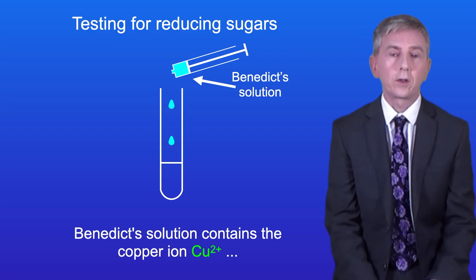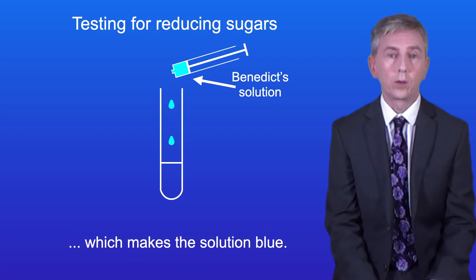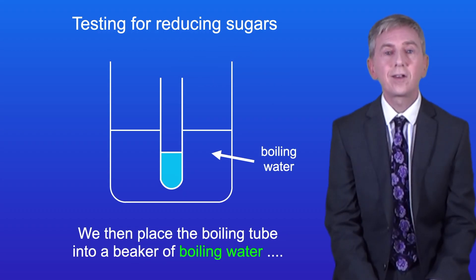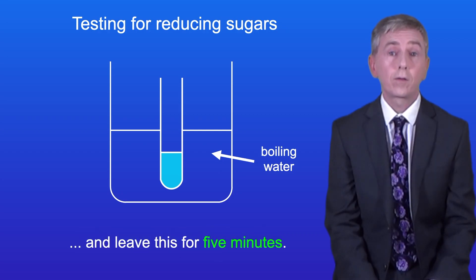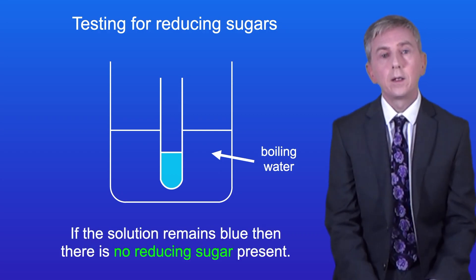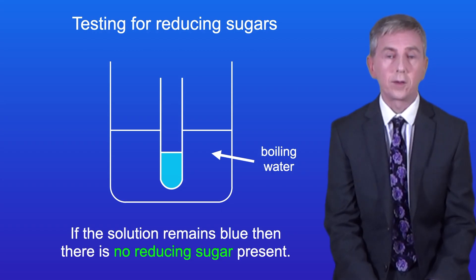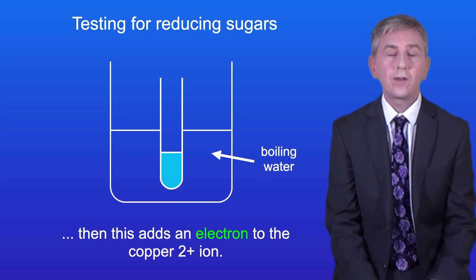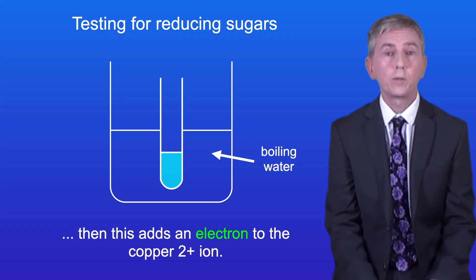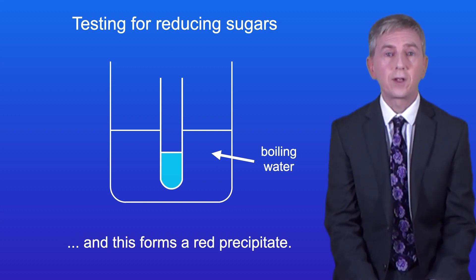Benedict's solution contains the copper ion Cu2+ which makes the solution blue. We then place the boiling tube into a beaker of boiling water and leave this for five minutes. If the solution remains blue then there's no reducing sugar present. However if a reducing sugar is present then this adds an electron to the Cu2+ ion, forming the Cu1+ ion and a red precipitate.